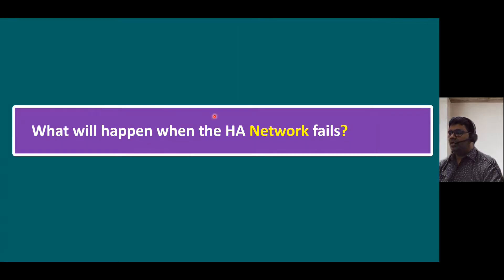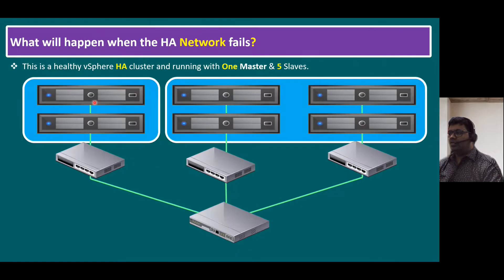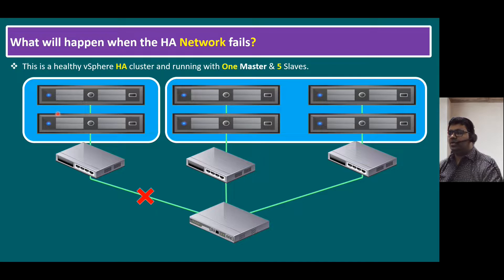What will happen when the HA network fails means, within our vSphere infrastructure, all of the sudden one of the network switches is unable to communicate. Let's say the core switch is not communicating, or one of the virtual physical switches is not communicating to our ESXi host. In this scenario, this switch is connected to two ESXi hosts, and the other hosts are connected to different switches. So the network becomes partitioned — two hosts become one partition, and the other four hosts become another partition.